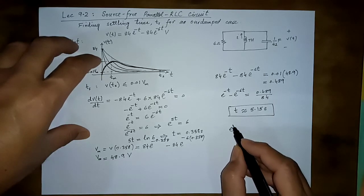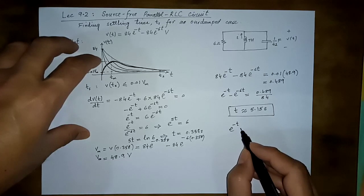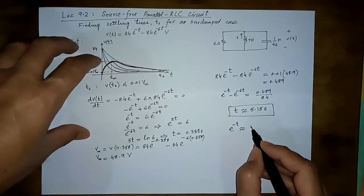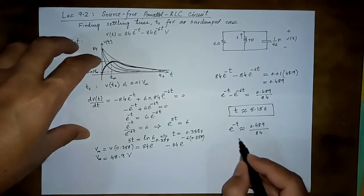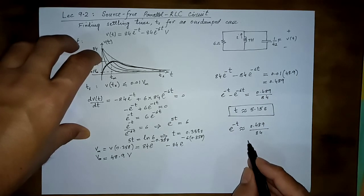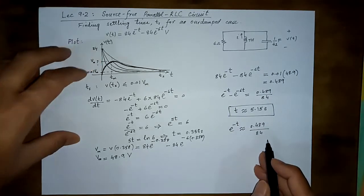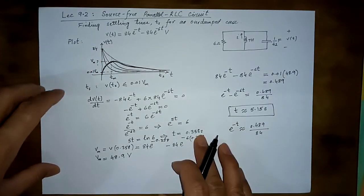e raised power minus t would roughly be equal to 0.489 over 84. And obviously by taking the natural log, you can very easily solve and get this value. So this is the settling time.